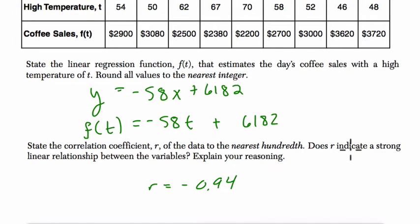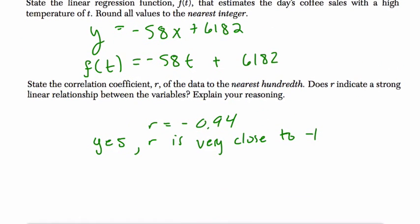And what is this, does r indicate a strong relationship? Yes. It does. Explain your reasoning. You can say yes, and the reason you can say yes is that r is very close to negative 1. Negative 1 and positive 1 are perfect fits. Anything very close to that means you have a great fit.